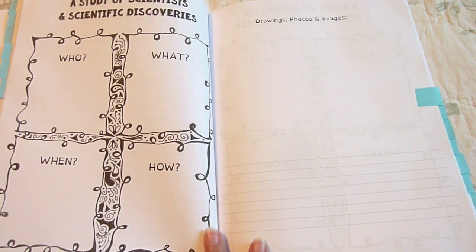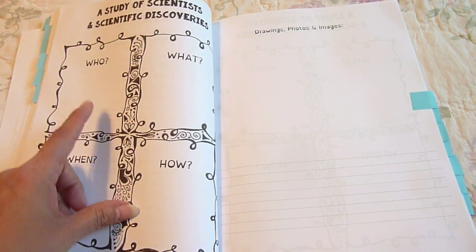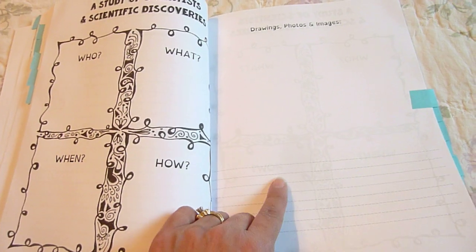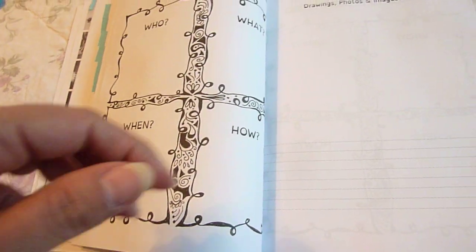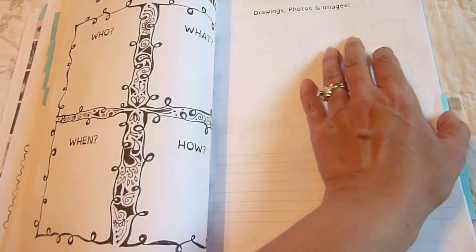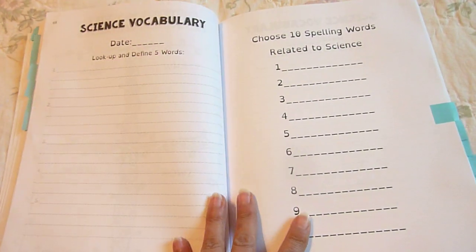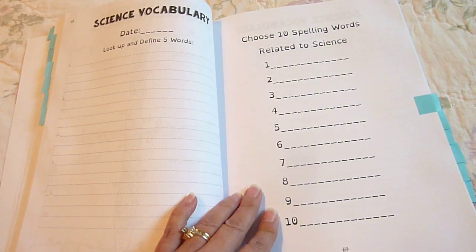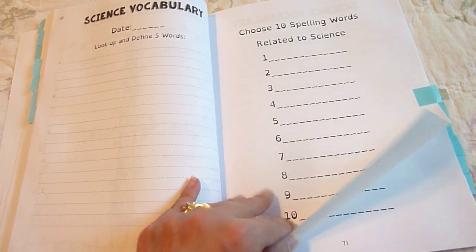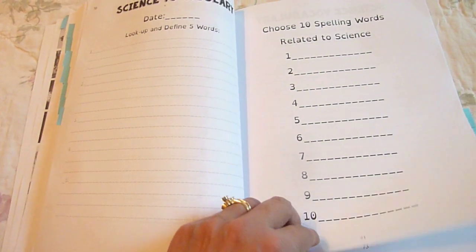A Study of Scientists and Scientific Discoveries. Who, What, When, and How. Drawings, photos, and images. Science Vocabulary pages. Look up and define five words. Choose ten spelling words related to science. Again, these pages repeat.